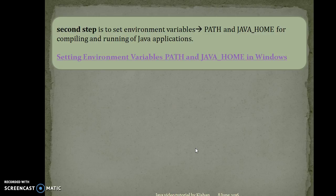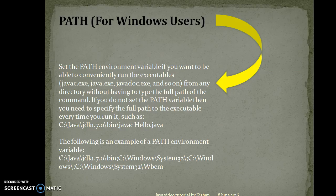Once you install JDK on your machine, the second step involves how to set the PATH and JAVA_HOME for compiling and running Java applications. We already covered how to set Java PATH in the previous video. In this video, we are going to look at how to set JAVA_HOME, but first let's discuss why we set the Java PATH in our environment variable.